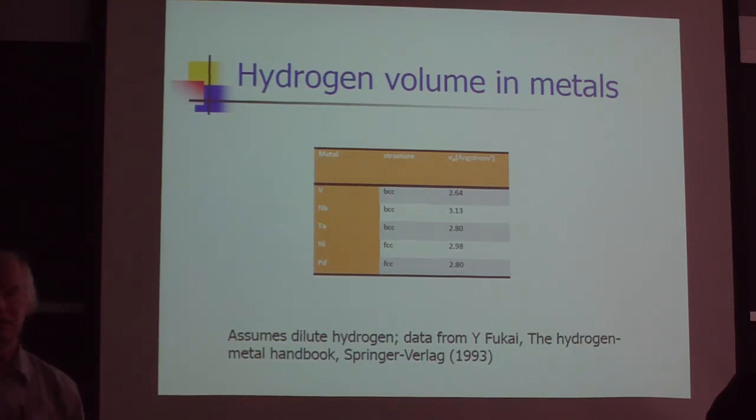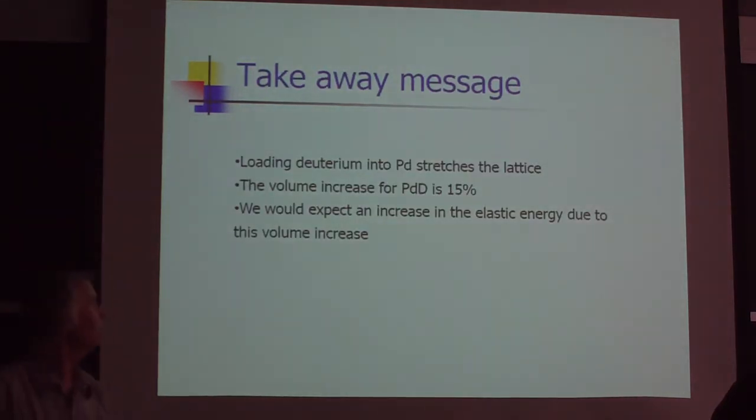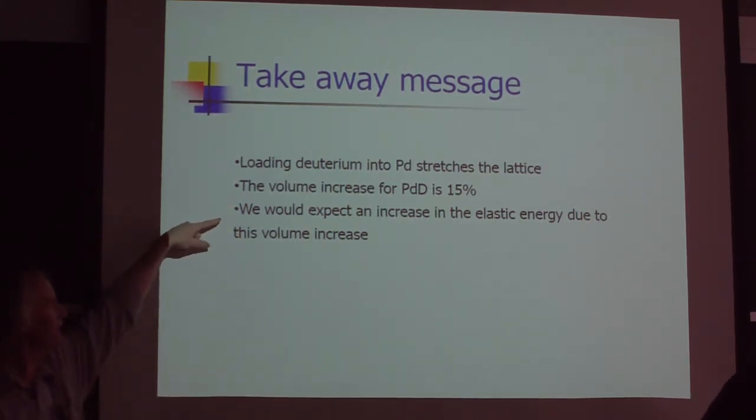And that can be understood against the number—like in palladium something like 15 or so cubic angstroms per palladium. So every time you put in a hydrogen atom, it expands the lattice a little bit. Takeaway message: loading deuterium into palladium stretches it a lot. The volume increase in palladium is 15%. And you would expect an increase in the elastic energy of the system due to this.